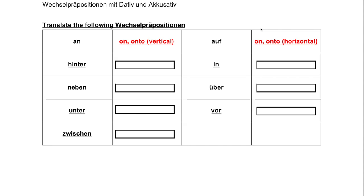'Auf' is also 'on,' but generally speaking this one is for horizontal things. So if something is on the floor or on a table, that is dative case and uses 'auf.' If you put something onto the floor or onto the table, that's accusative and it still uses 'auf.'